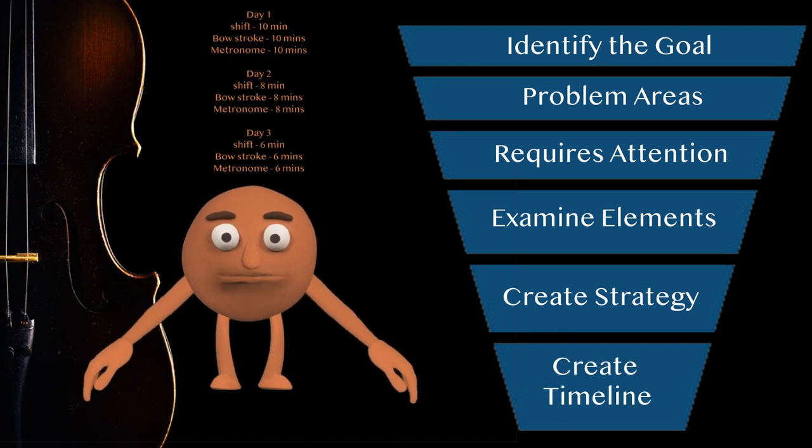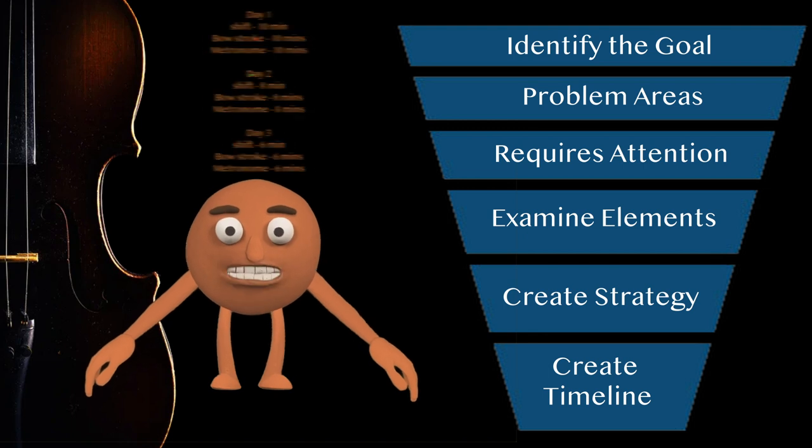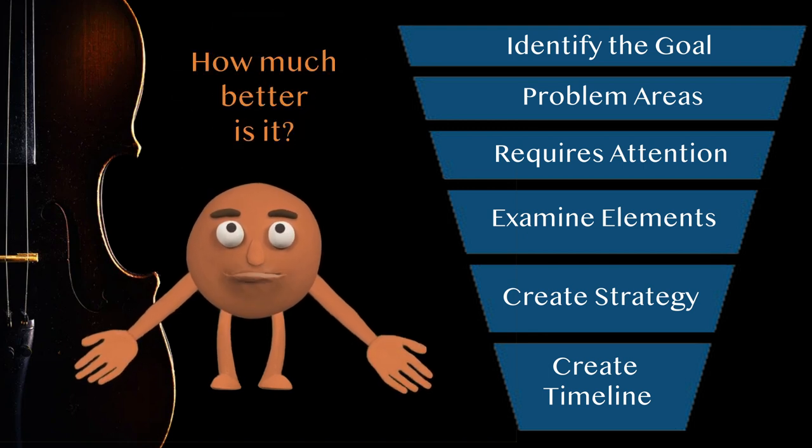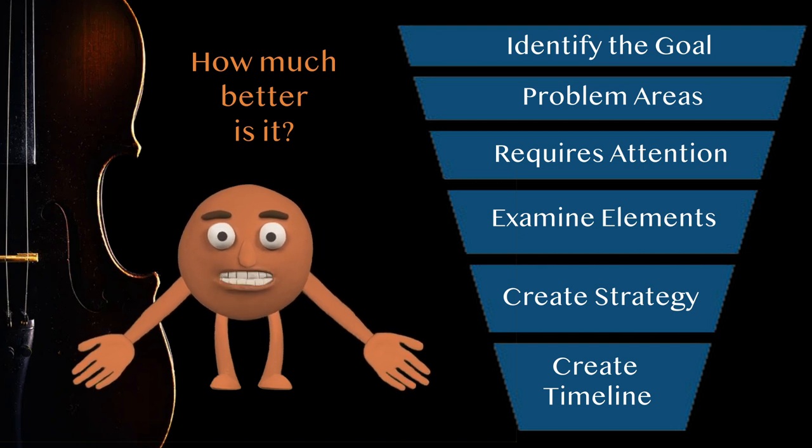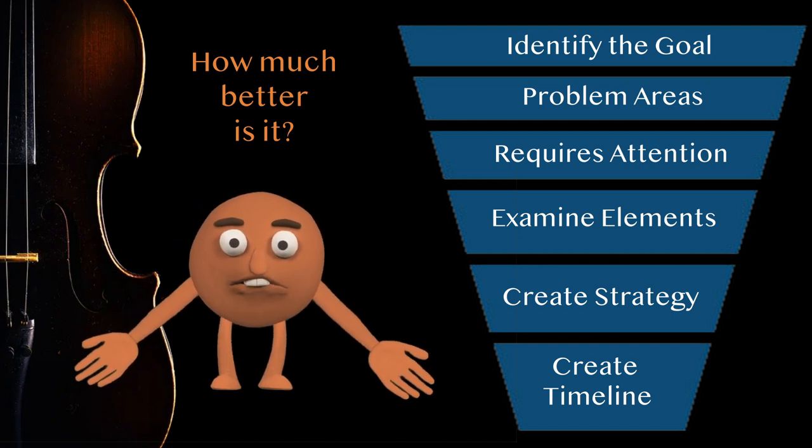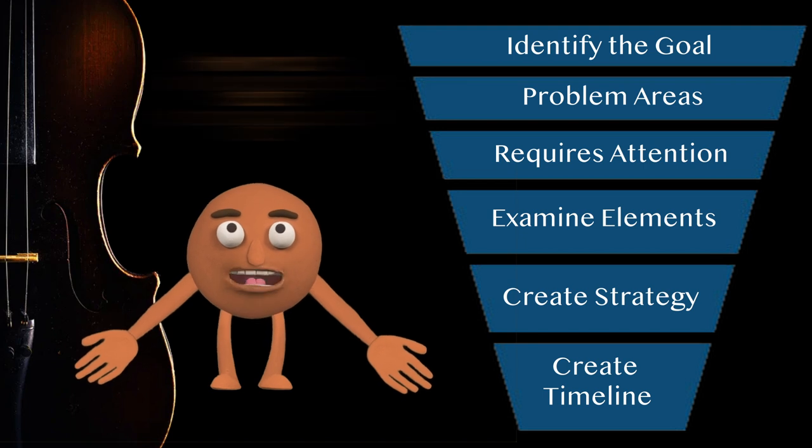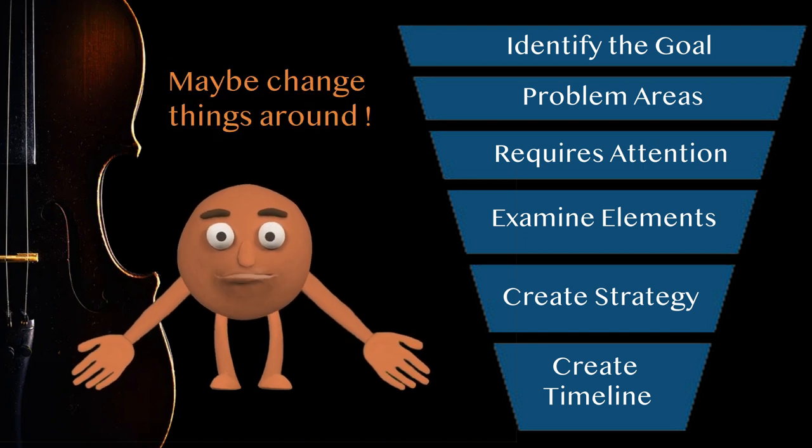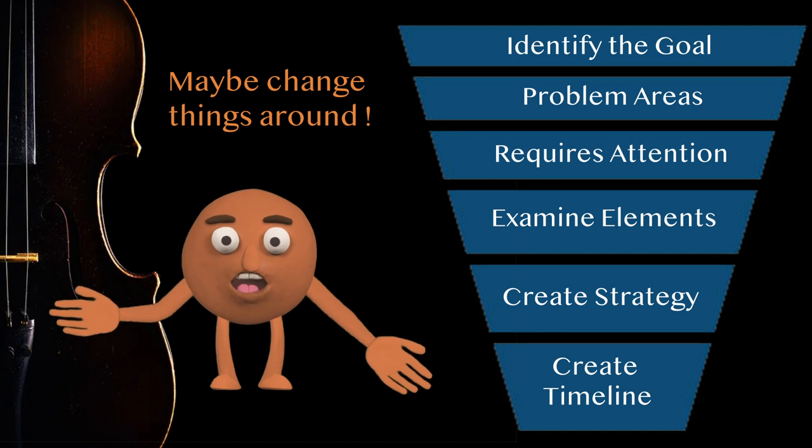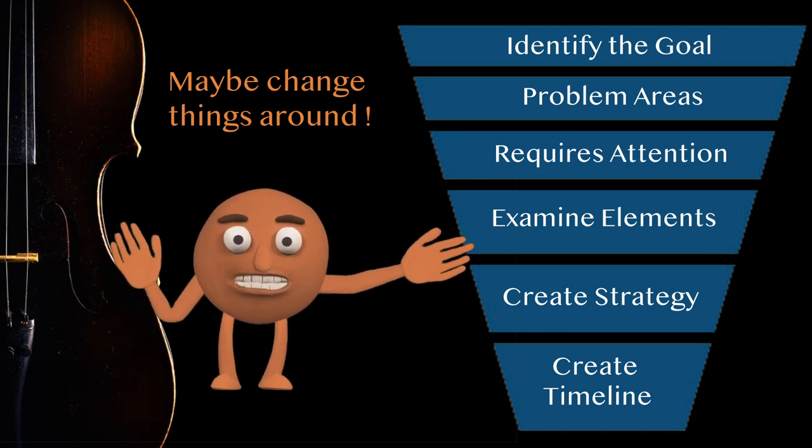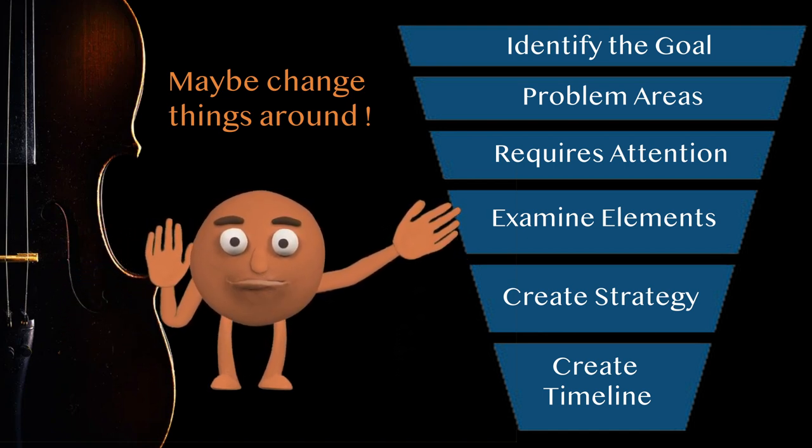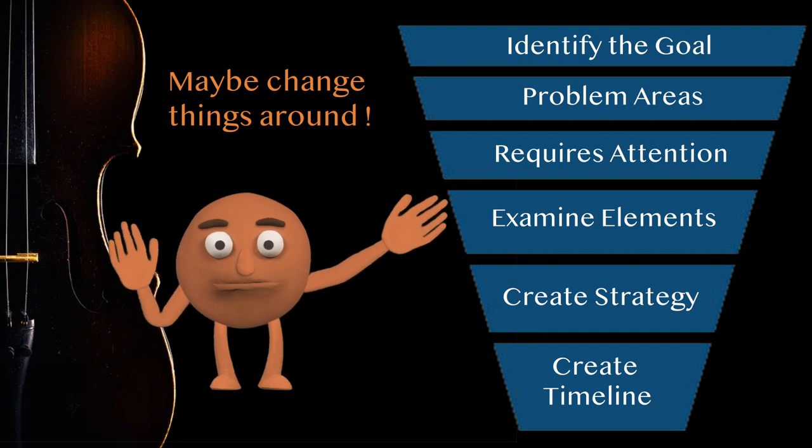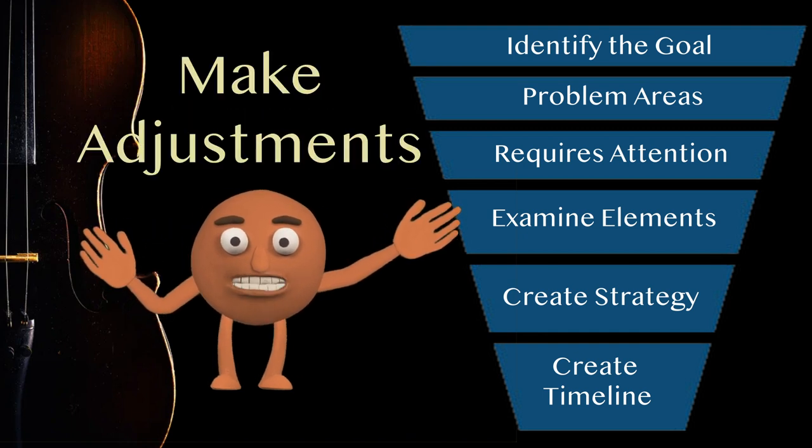Once the timeline that has been created is completed, it's time to evaluate our progress. See what has happened. See if we have achieved what we set out to do. If necessary, now is the time to make adjustments to the strategy. And don't worry. It's perfectly fine if you don't reach your goal for the passage. Just evaluate what's happened and make adjustments.